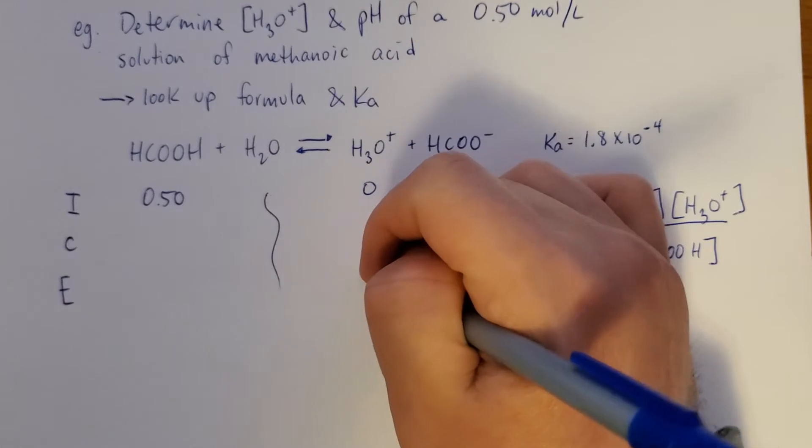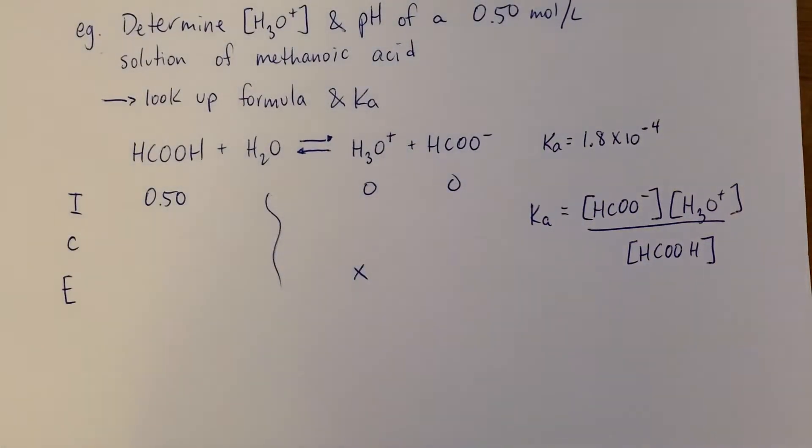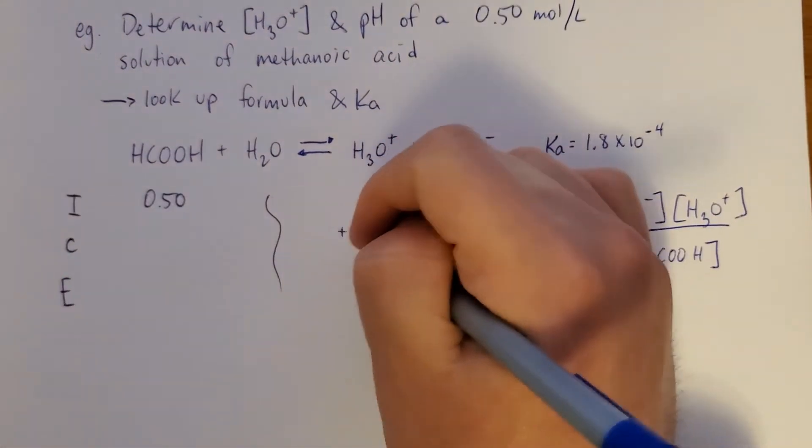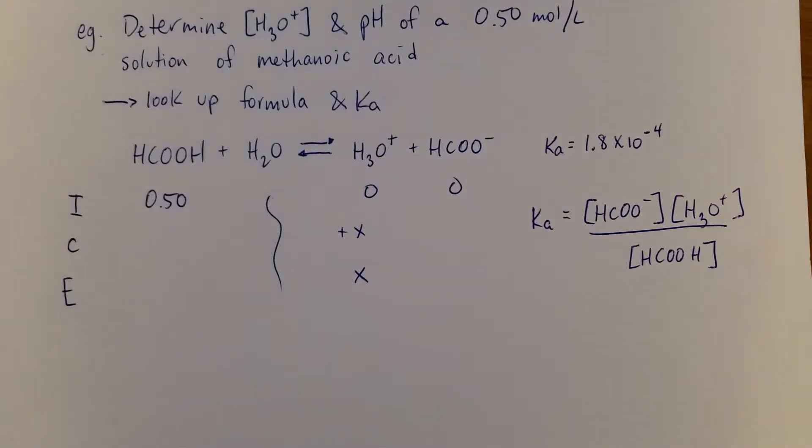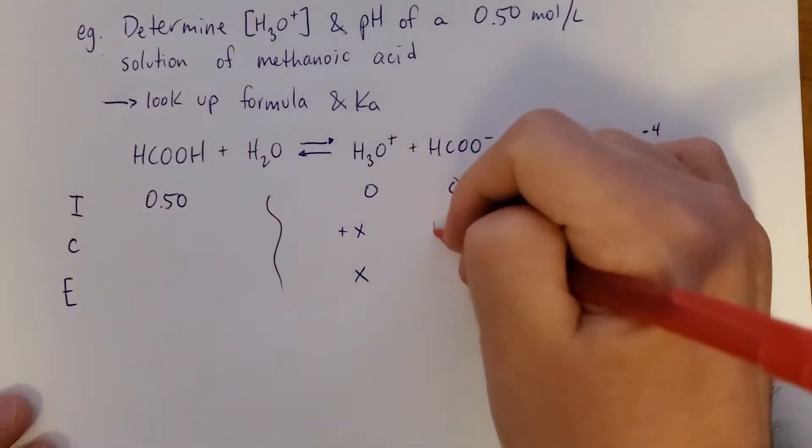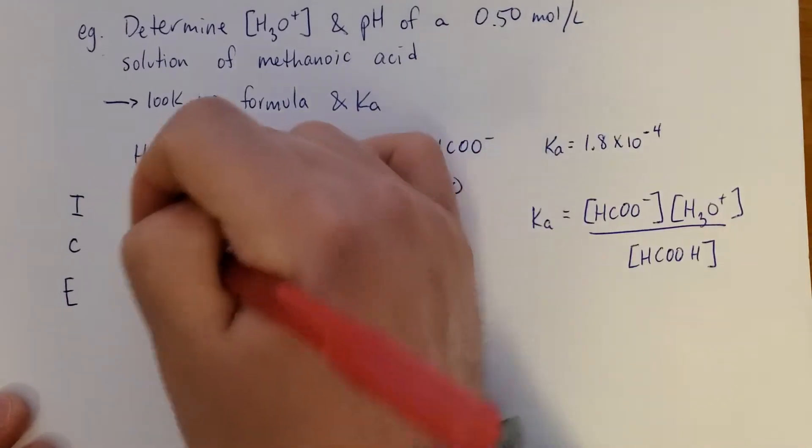Whatever the concentration of H3O+ at the end is, that's what we're trying to find. We'll call that X. Okay. In order to go from 0 to X, you have to add X. So the rest of the chart just ends up looking like this.